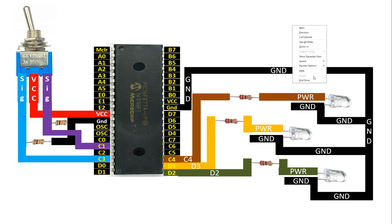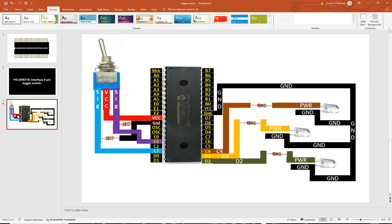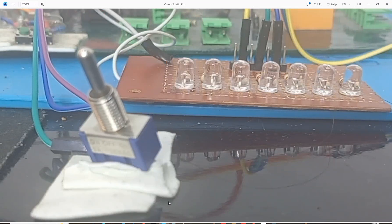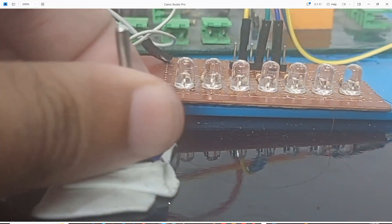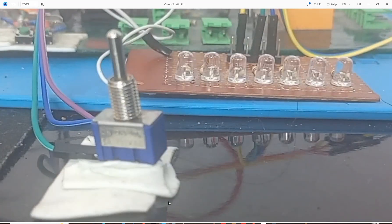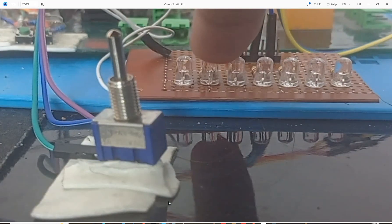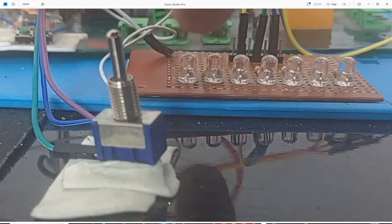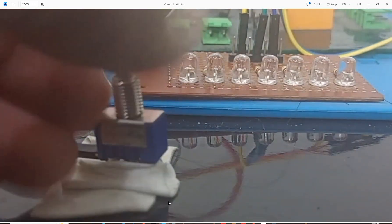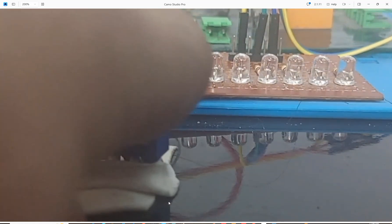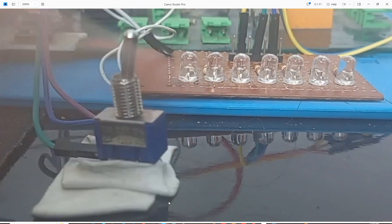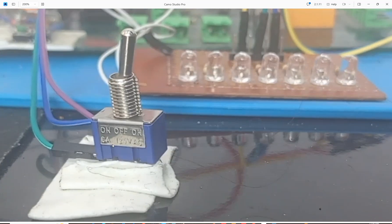Let me introduce you to the hardware before we move on to programming. This is our hardware — here is the three-pin toggle switch, and these are the three LEDs that will be used: left, mid, and center. When the toggle switch is on the left, the left LED turns on; center, center turns on; right, the right turns on. You can also see on the body of the toggle switch it is labeled on, off, on. Now let's move on to MicroC for PIC to start programming.